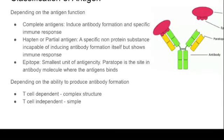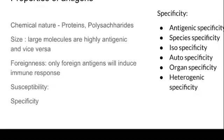Depending on the ability to produce antibody formation, antigens are also classified as T-cell dependent antigen and T-cell independent antigen. T-cell dependent antigen has a complex structure, whereas T-cell independent antigen has a simple structure. So the two classification types are: depending on function — complete antigen and partial antigen — and depending on ability to produce antibody — T-cell dependent and T-cell independent.